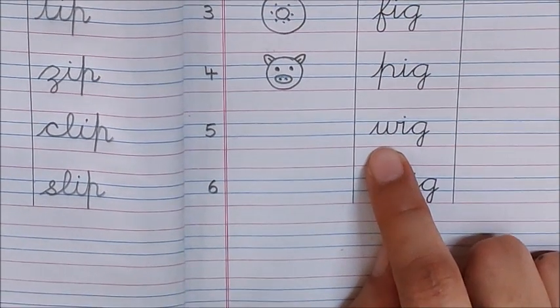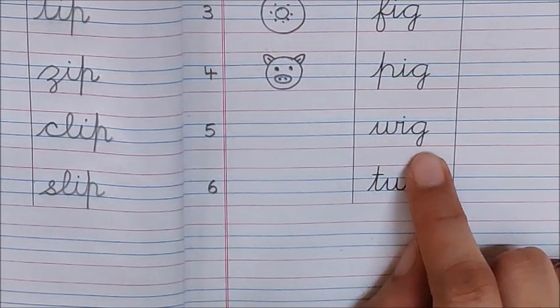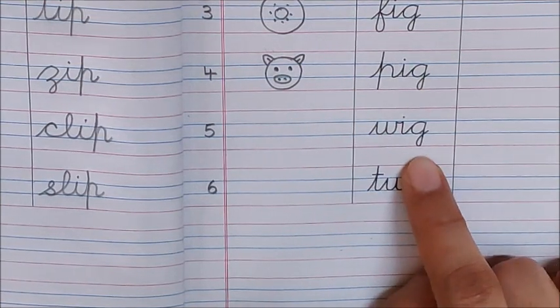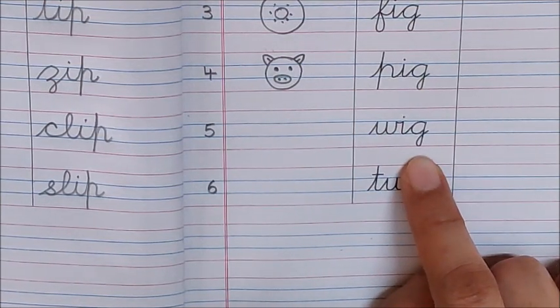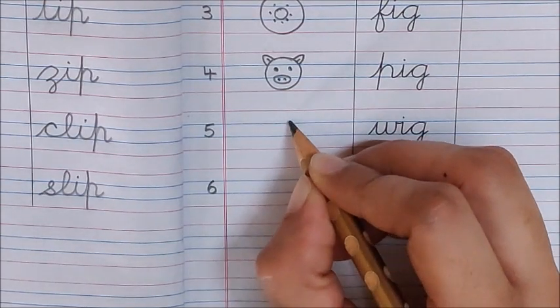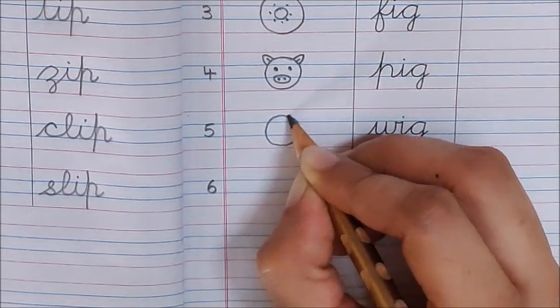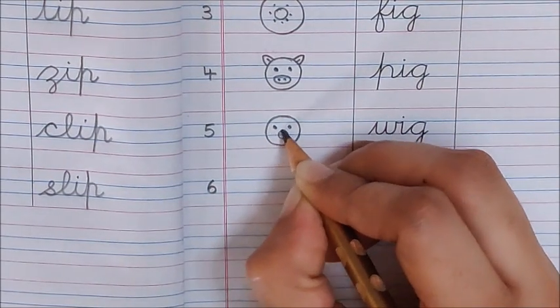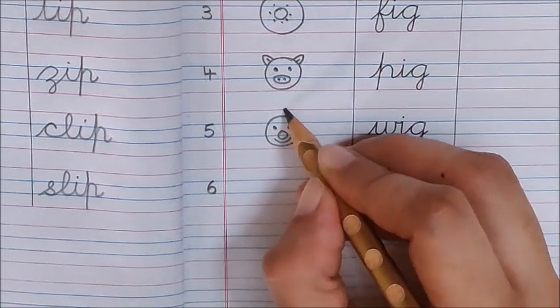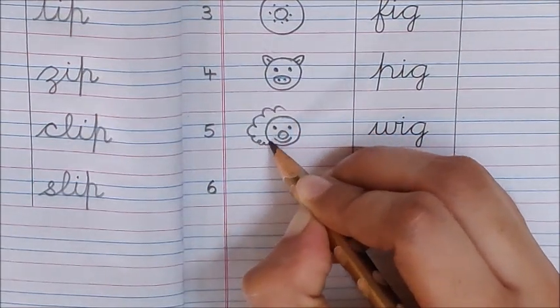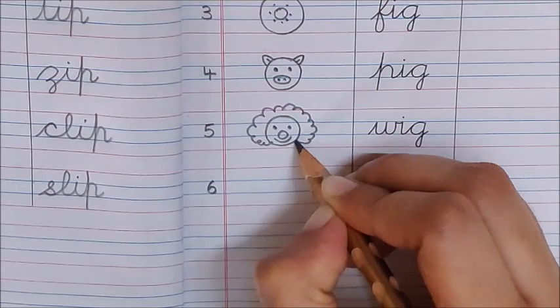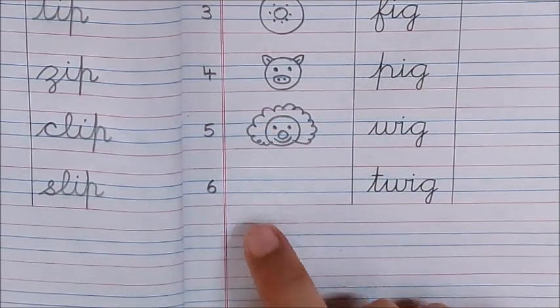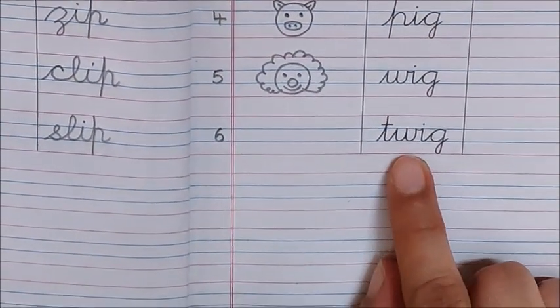Now let us go to the next word. W-i-g-a, wig. Wig means artificial hair. So children, here is a joker and he is wearing a wig. Wig. Okay children, now let us go to the next word.